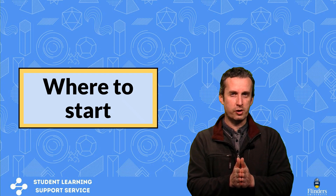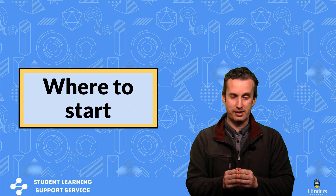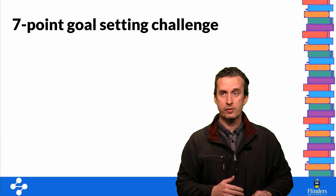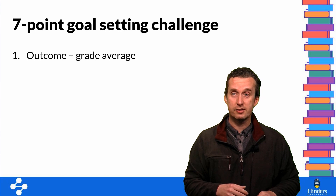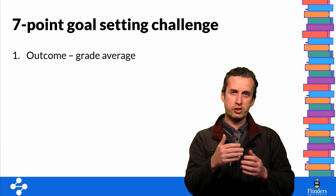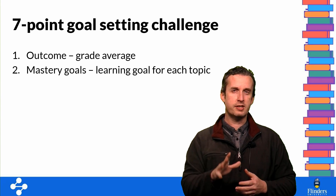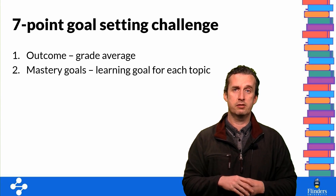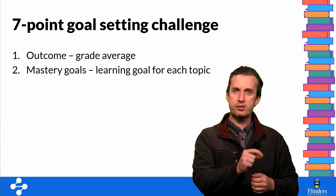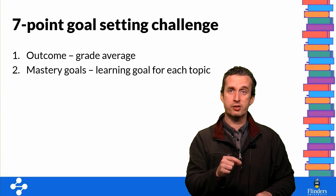So where to start? I've told you a lot about constructing good goals, but I might have overwhelmed you in the process. So here is some specific advice for setting goals for the upcoming semester — I call it my seven-point goal setting challenge. First, set yourself an outcome goal: determine what average grade you'd like to get this semester and set it just beyond what you think your ability level is — if you're a credit-average student, aim for a distinction. Second, set some mastery goals for each of your topics this semester. Go into the materials and identify at least one thing for each topic that you're really keen to learn — something you will know by the time that topic has finished.